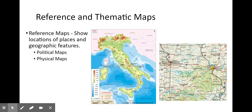To go over some general categories of types of maps, there are two main categories we're going to talk about. The first is reference maps, and the second is thematic maps. Reference maps show locations of places and physical features. You can see two different versions of reference maps on this slide.